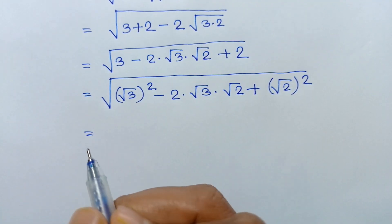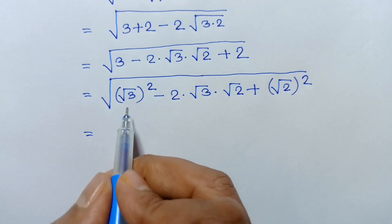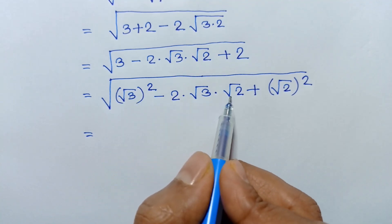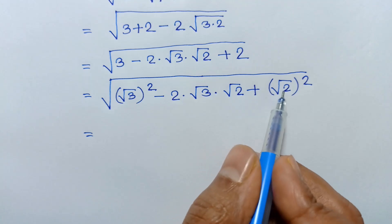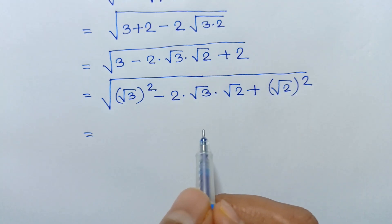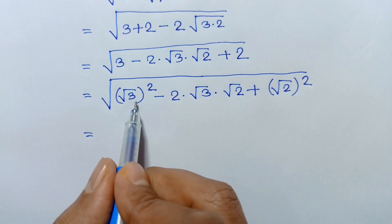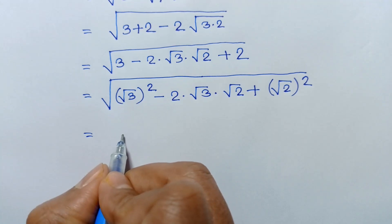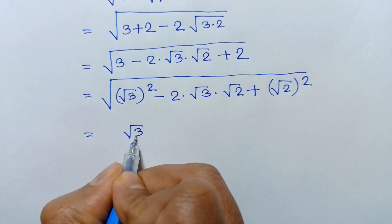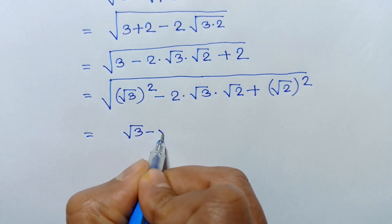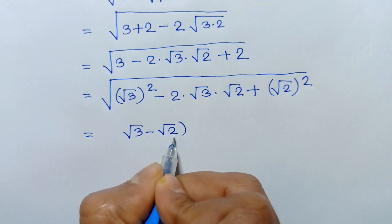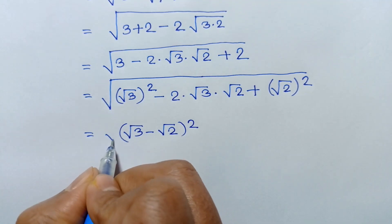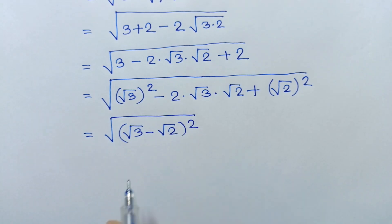Applying the formula a squared minus 2ab plus b squared equals a minus b whole squared, we can write this term as square root of 3 minus square root of 2, whole squared, under a square root.